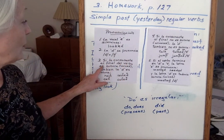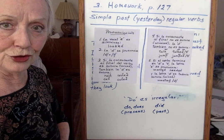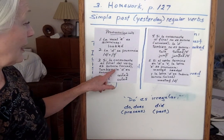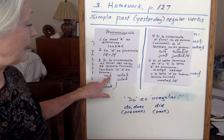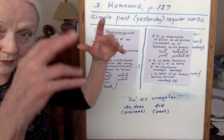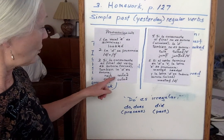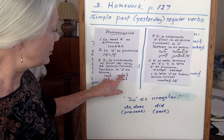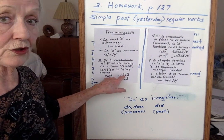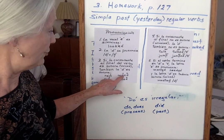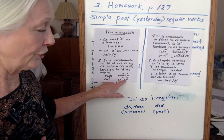Si la consonante al final del verbo es sonora — voiced, like B, D, G, J, L, M — también la letra -d es sonora. Por ejemplo: 'rain' — the N is voiced, so this will be 'rained', voiced D. Here we have 'call' — the L is voiced — so this is 'called'.